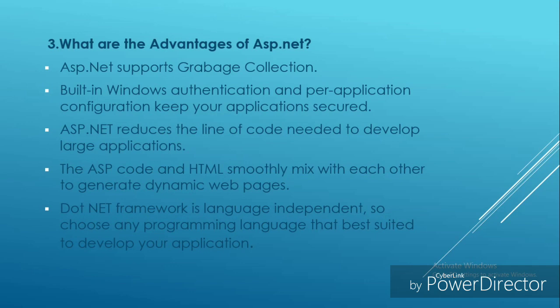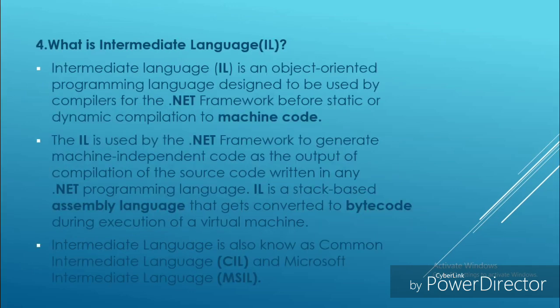Fourth question: what is the intermediate language? Intermediate language is an object-oriented programming language designed to be used by the compiler for the .NET framework before starting on dynamic compilation to machine code. The intermediate language is used by the .NET framework to generate machine-independent code as the output of the compilation of source code written in a .NET programming language. IL is a stack-based assembly language that gets converted to byte code during the execution of a virtual machine. Intermediate language is also known as common intermediate language and Microsoft intermediate language.